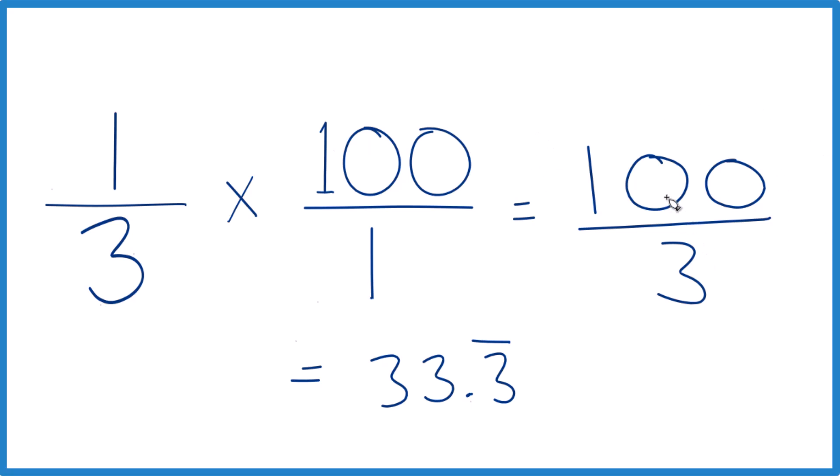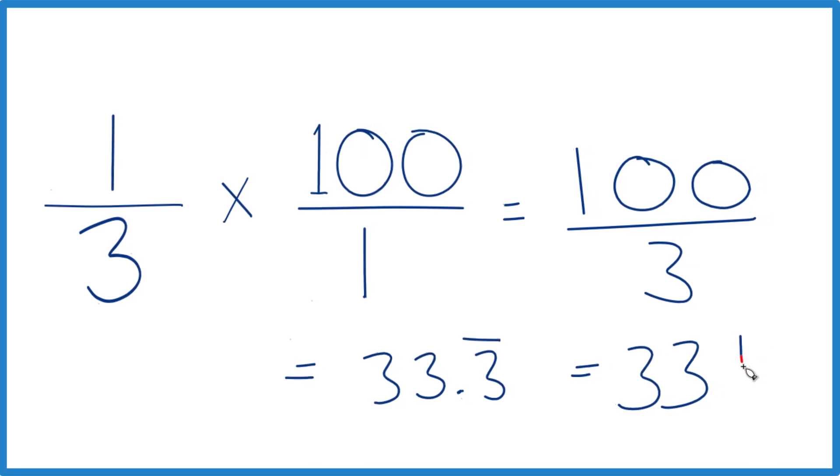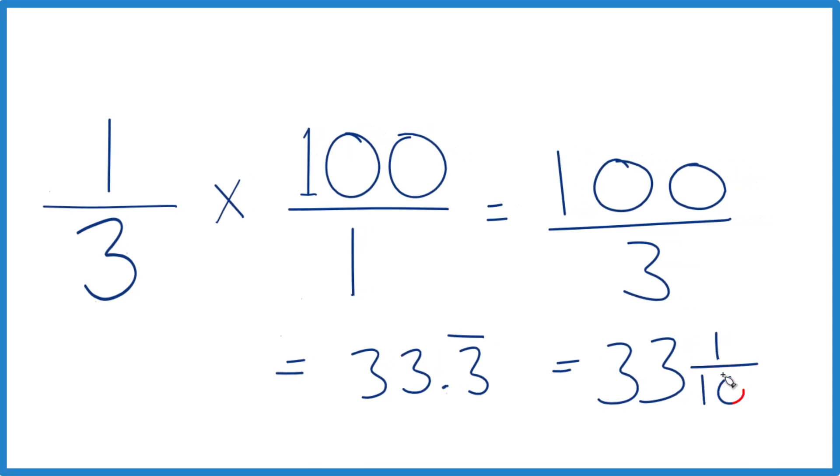And so 100 over 3, we could write this as a mixed number because 3 would go into 100 33 times. 3 times 33 is 99, so we'd have one left over. So you could call it 33 and 1 one-hundredth as well if you needed a fraction.